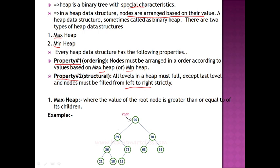At level 0 is the root, level 1 and level 2 follow. At level 2, fill left to right — you add nodes one by one with no gaps. At level 3, we add elements like 21, 18, 15 in order. If you skip the left and fill the right first, that is wrong. You must fill left to right.